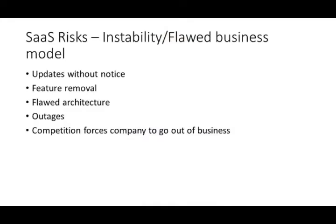Another risk is instability or flawed business models. SaaS providers usually do updates without notice, may have service outages, or remove and add features you weren't expecting. They may also have a flawed business or technical architecture with constant outages. Competition between SaaS providers may also force companies you've partnered with to go out of business — and if you've put all your eggs in one basket, you may be unable to continue.